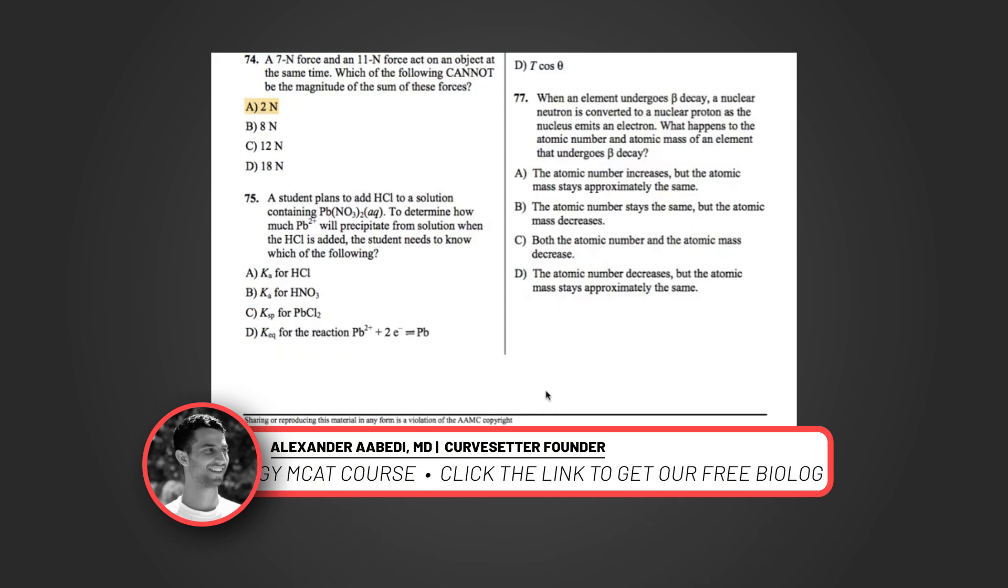Question 75: A student plans to add HCl to a solution containing Pb(NO3)2 aqueous. To determine how much Pb2+ will precipitate from solution when HCl is added, the student needs to know which of the following? A says the Ka for HCl. We actually know that HCl is a strong acid, so we don't really need a Ka for HCl. We know that it's going to dissociate completely. B says Ka for HNO3. The important thing to know is that we don't even care about NO3. We're not even adding HNO3 to solution. We have NO3, and it's kind of like a spectator ion here.